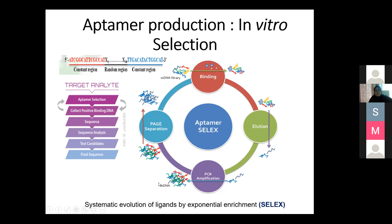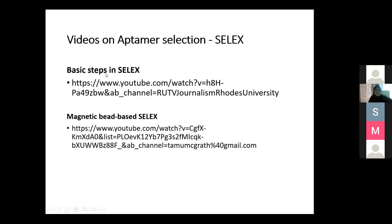The eluted aptamer is amplified by PCR to amplify only the single-stranded DNA that binds to the target — the DNA with high affinity and specificity. After PCR, we get double-stranded DNA, and during PAGE separation we convert it back to single-stranded DNA in order to proceed to the next cycle, because only single-stranded DNA can be used for target binding. I have prepared YouTube links for basic SELEX steps and magnetic bead SELEX — you can watch them later.